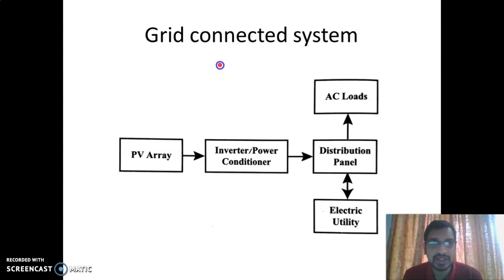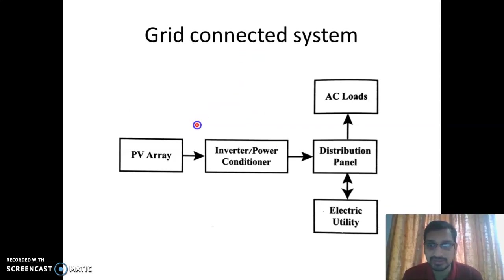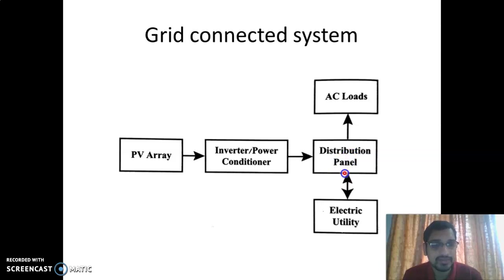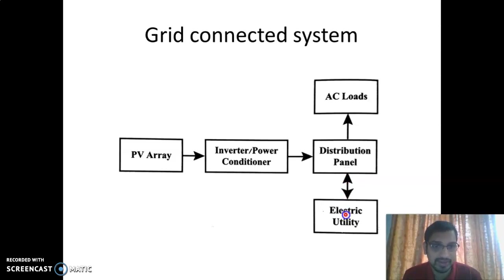This is the grid-connected system. The main components of a grid-connected system are the PV array, an inverter or power conditioner, a distribution panel, and a bidirectional network from the distribution panel to the electric utility.